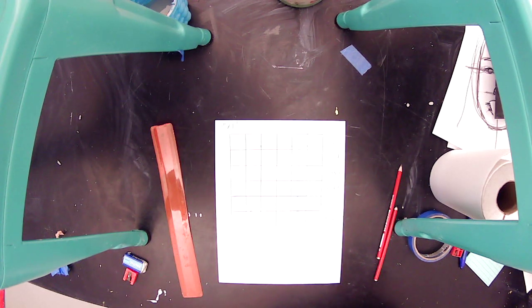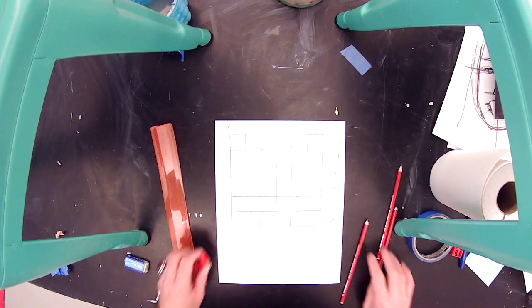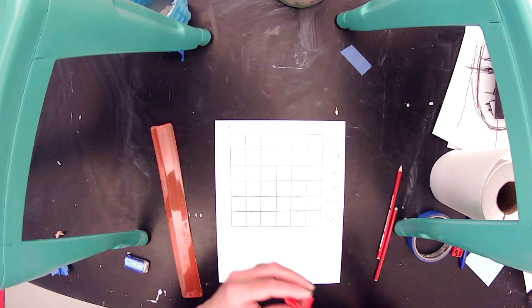Excuse me, Ms. Grenninger? Yes. How many boxes are we doing? I can't see it well in the camera. Six by six. Okay. Six inches by six inches.